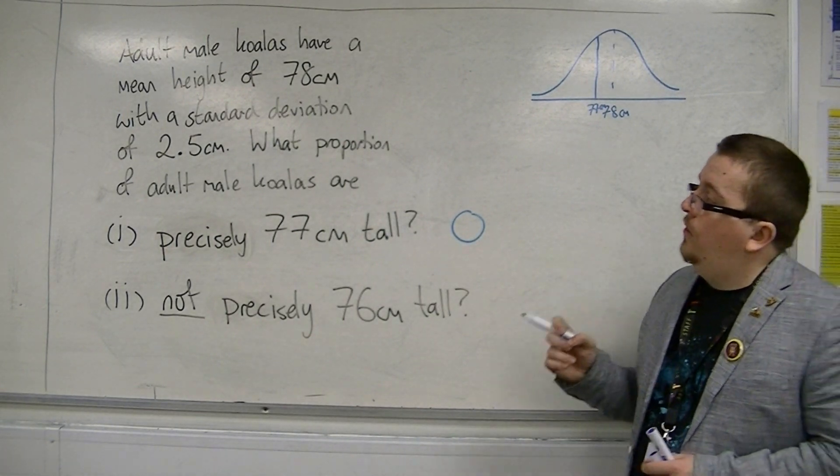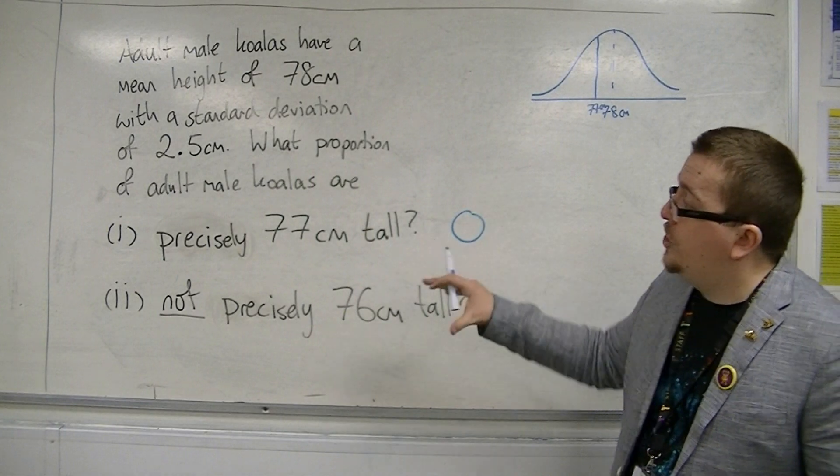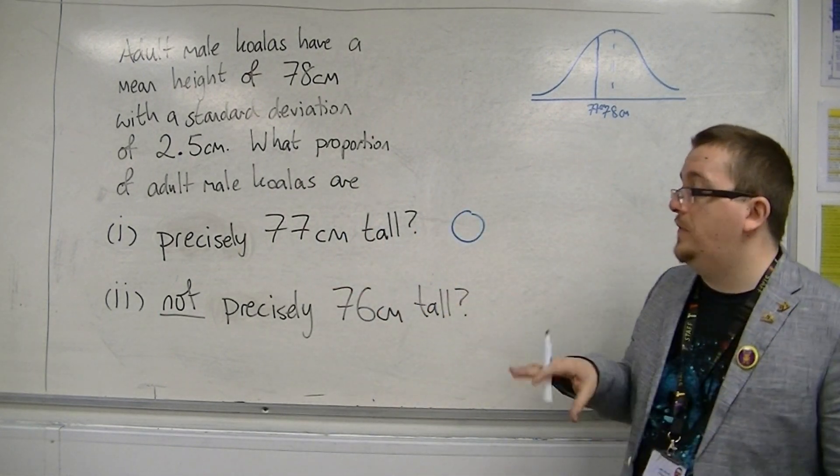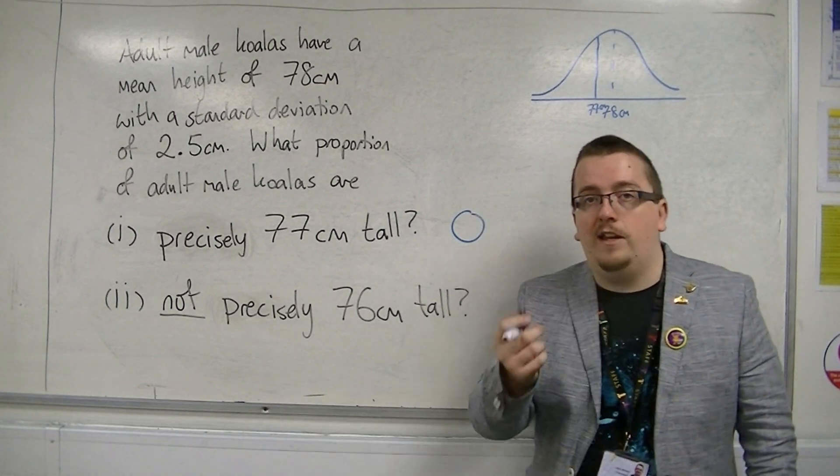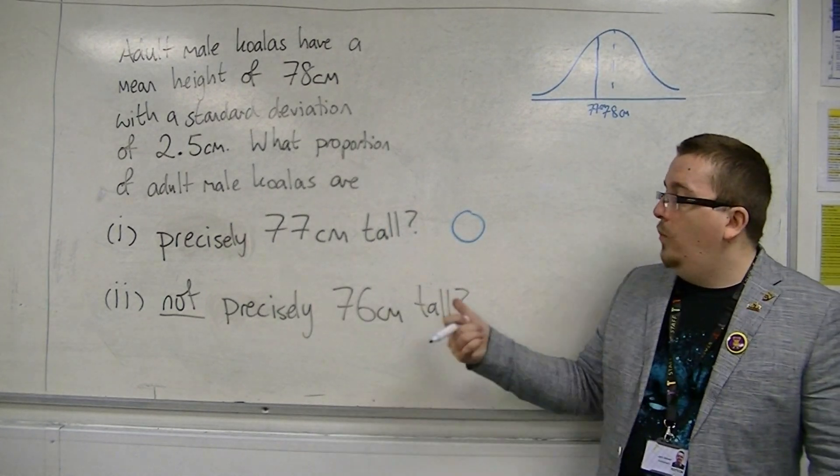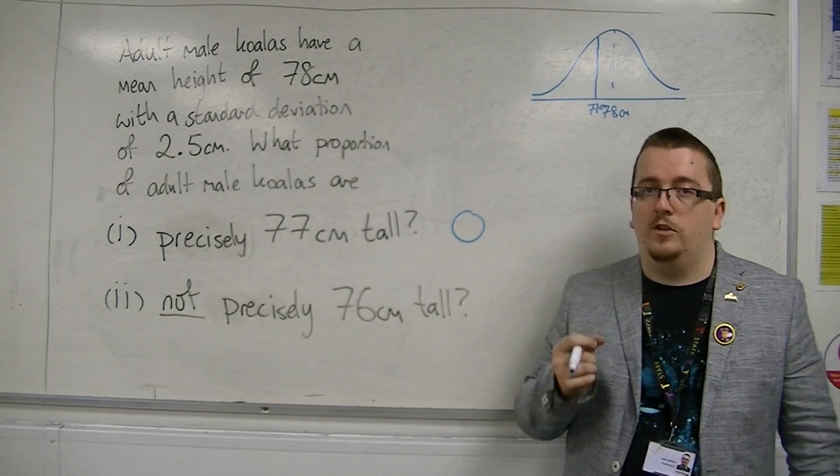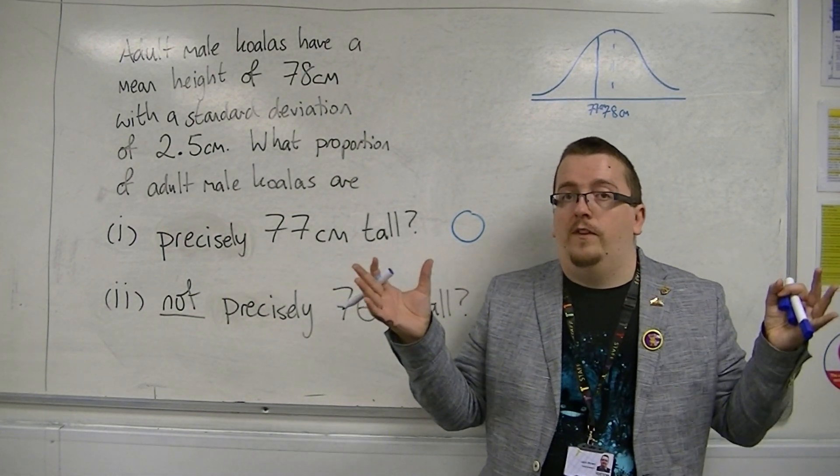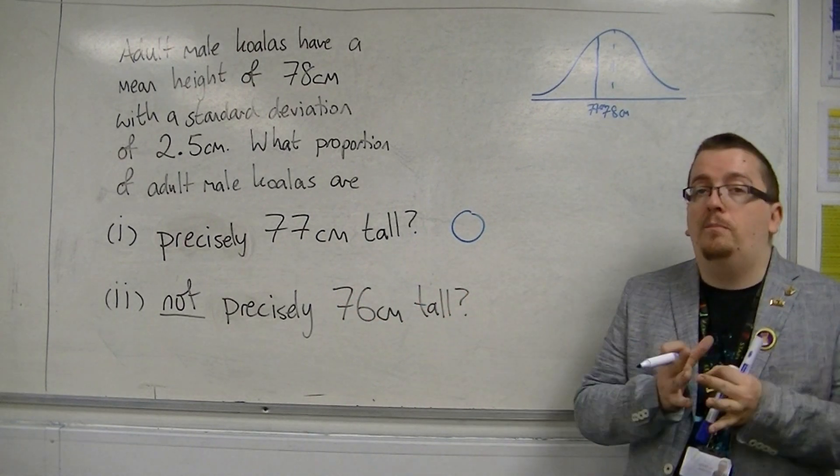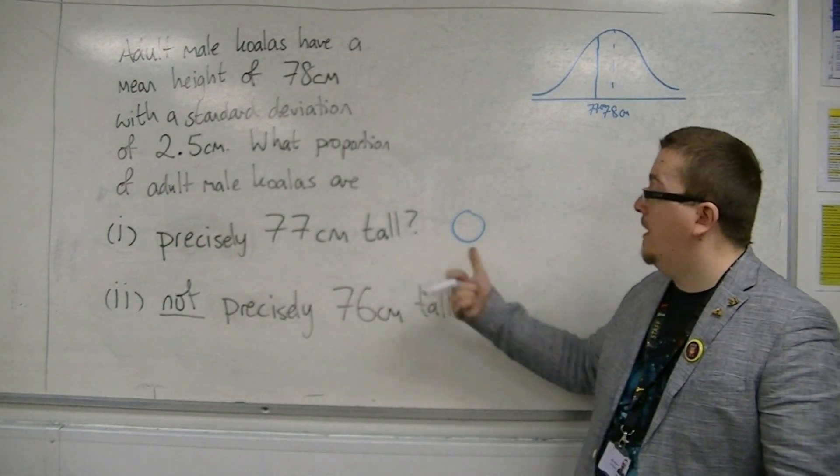So that leads us on to what proportion of adult male koalas are not precisely 76 centimeters tall. Seeing as the likelihood of being able to measure one that is 76 centimeters tall is zero, then the probability of not measuring one that is 76 centimeters tall must be one. One take away the zero.